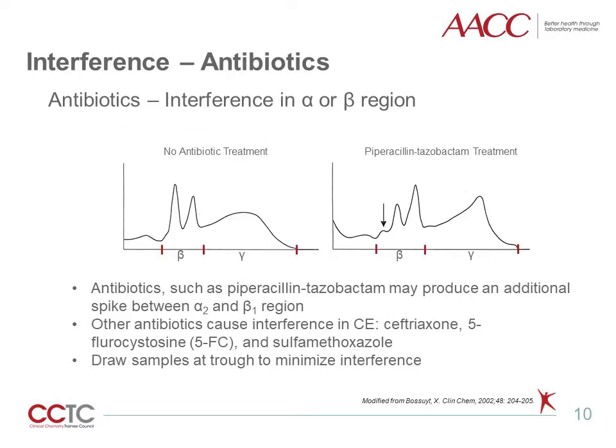Antibiotics also cause interference in CE due to absorbance at UV wavelength and appear as a monoclonal band in the alpha or beta regions. For example, piperacillin-tazobactam administration generated a small peak at the anodal site of beta-globulin, which was not present when the sample was collected before its administration. Other antibiotics that cause interference in CE include ceftriaxone, 5-fluorocytosine, and sulfamethoxazole. Immunofixation can be utilized to rule out interference due to antibiotics. Interference may be reduced by drawing the electrophoresis sample when the antibiotic is at trough concentrations.